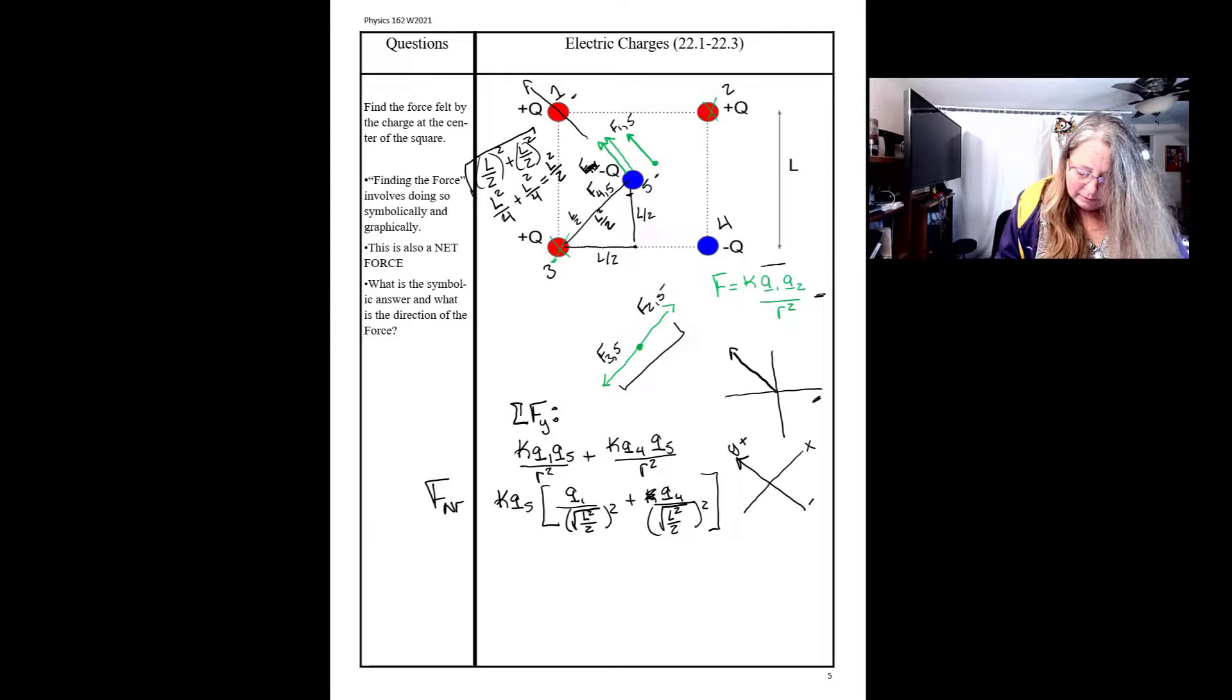And so my force net equals this. Equals, well, square root squared. It's going to be L squared over 2. So, we can rewrite it again. KQ5 times Q1. Let's see. The 2 is going to pop up top. We'll get 2 over L squared. Plus Q4 times 2. Put the 2 in front. Over L squared.